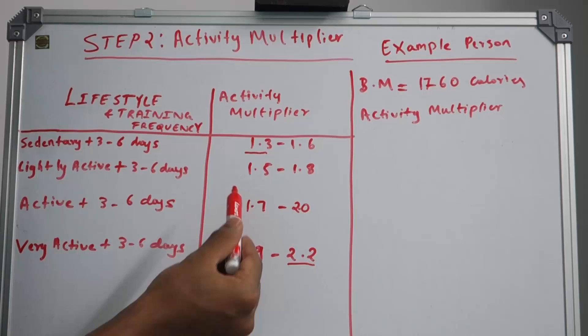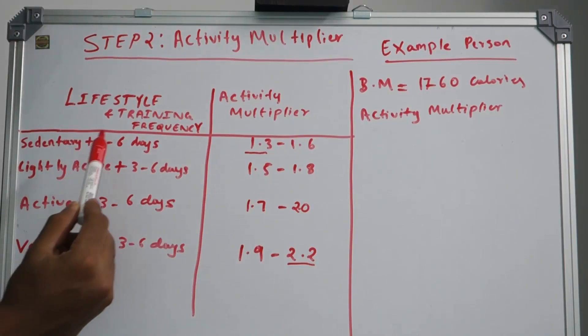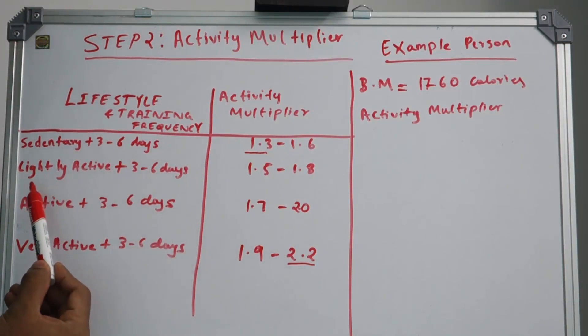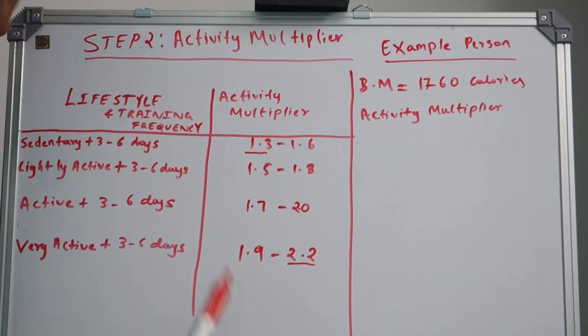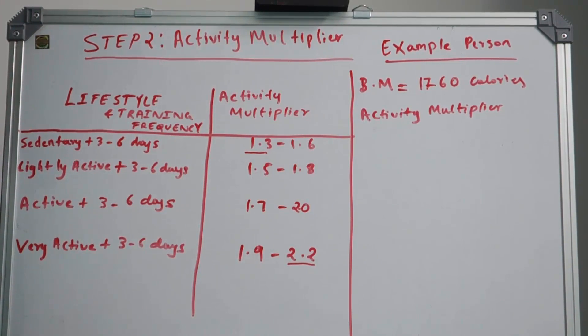We have sedentary plus 3 to 6 days a week, lightly active plus 3 to 6 days, active plus 3 to 6 days, and very active plus 3 to 6 days. Now assuming you are a student, an engineering student, which means you will be lightly active.